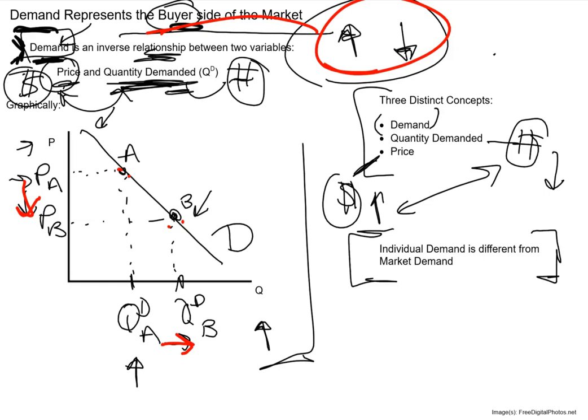Individual demand is different from market demand. Your individual demand is how you would personally respond to different prices. But what we're looking at is market demand — this capital D representing the market demand for a product. Individually, you can get a lot of intuition about what's happening by thinking about how you would individually respond to a situation. What the market represents is the aggregation of all the individuals, so we can use your individual intuition to think about how the overall market would work.